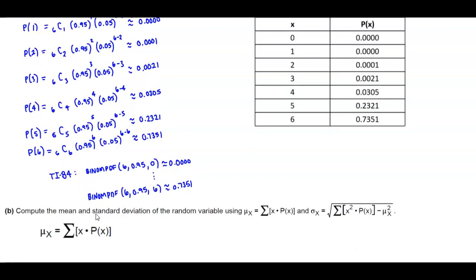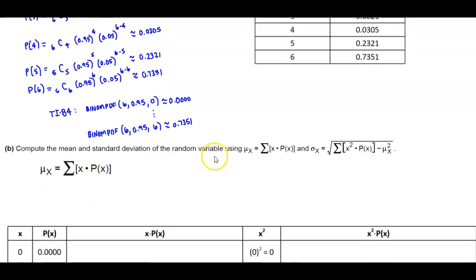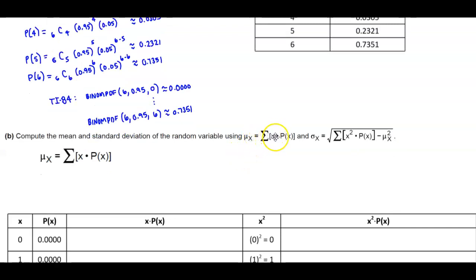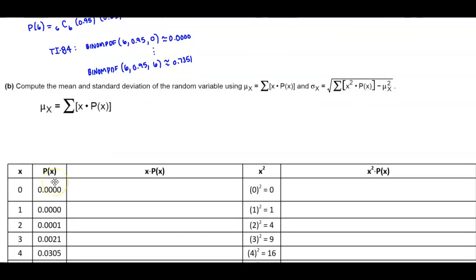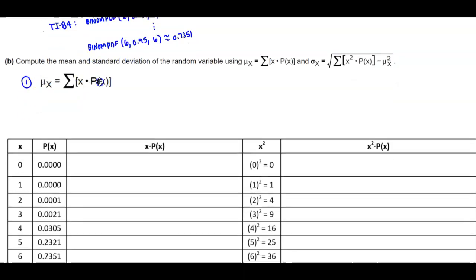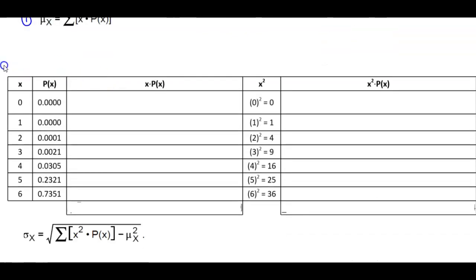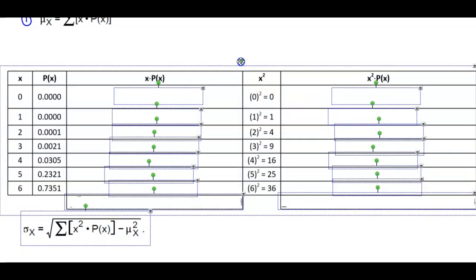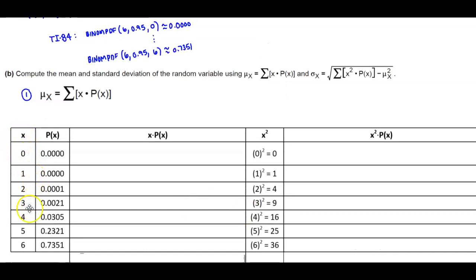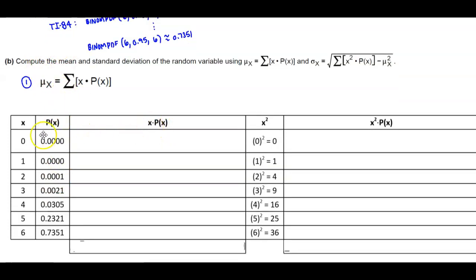Part B asks us to compute the mean and standard deviation of the random variable using the formula where the mean equals the sum of x times P(x), and the standard deviation equals the square root of the sum of x² times P(x) minus the mean squared. To find the mean, we create a chart. The first column is x, the second column is P(x) from part A, and the third column is x times P(x). We take 0 multiplied by its probability to get 0.0000.